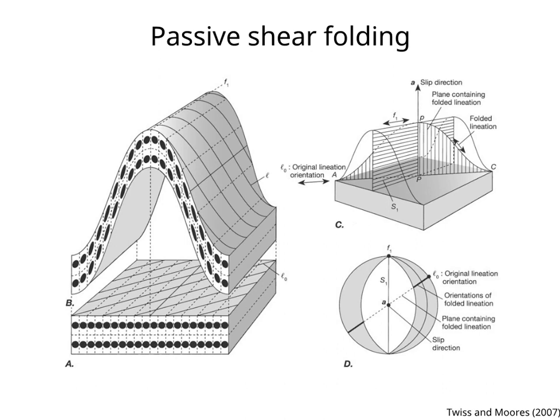the slip vector A, the original lineation L0, and the plane containing the folded lineation. The great circles are bedding planes on the fold. Notice that the slip direction A is defined by the intersection of the axial surface and a vertical plane containing the lineation.